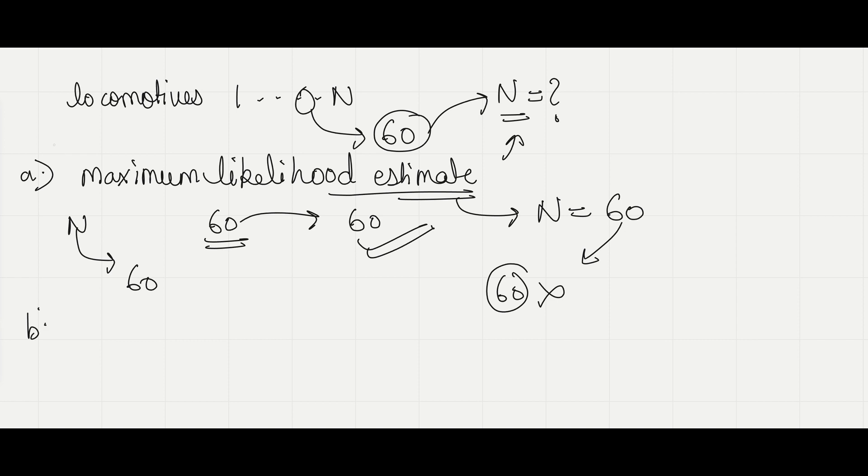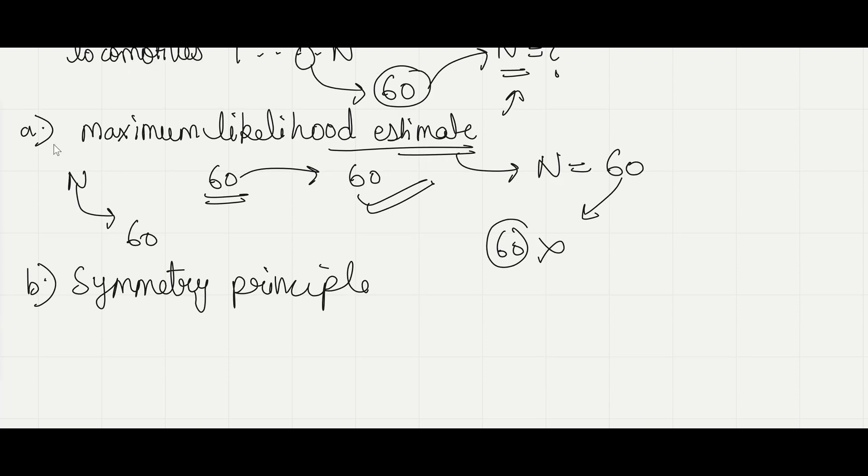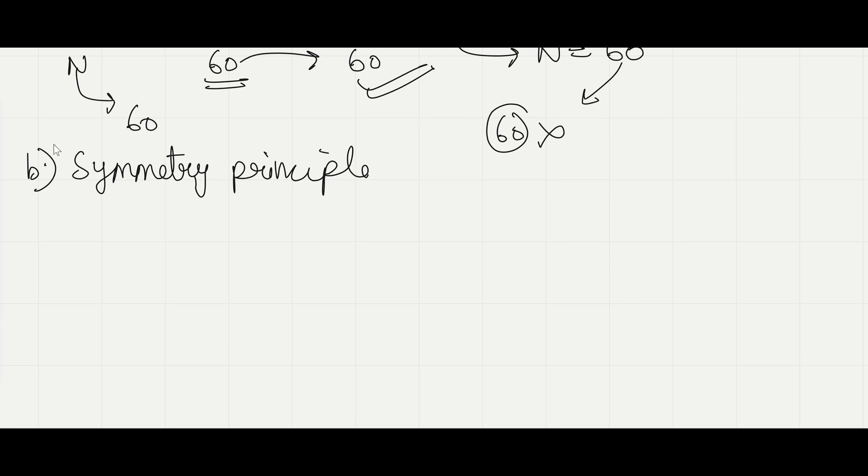Next, we can use the symmetry principle for making an estimate to capital N. Now, since we have seen a locomotive numbered 60, suppose this is the number of locomotives starting from 1 till N. Now, we have seen a locomotive numbered 60, so it divides the segment into 2 equal sizes on an average according to the symmetry principle.